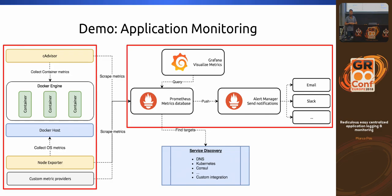For the monitoring demo I'll start everything at once with a Docker Compose file — it's a big demo squeezed in. We will start Prometheus database, Grafana, the Alert Manager so if I stop a container you'll see an alert go out, the Node Exporter to get details on my system — it could also be remote — and cAdvisor, a project from Google that exports metrics for Docker containers and all available Docker containers.